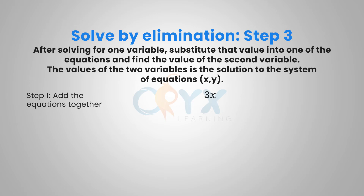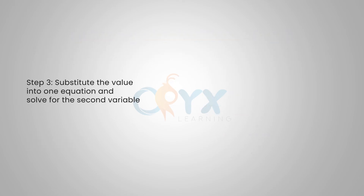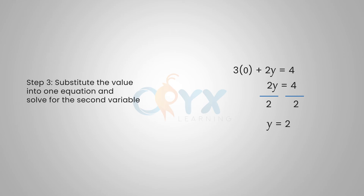In this example, we have 3x + 2y = 4 and 3x − 2y = −4. Adding the equations together, 2y − 2y = 0, eliminating the y variable, leaving us with 6x = 0. Dividing both sides by 6, we get x = 0. Next, substituting into one equation: 3(0) + 2y = 4, which simplifies to 2y = 4. Dividing both sides by 2, y = 2. So with x = 0 and y = 2, the solution is the coordinate point (0, 2).